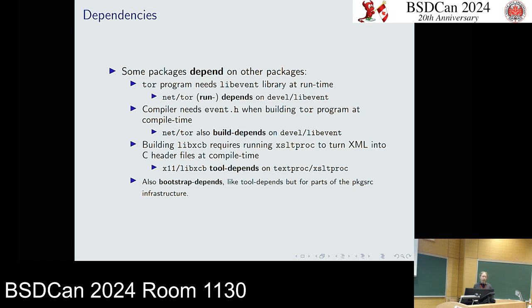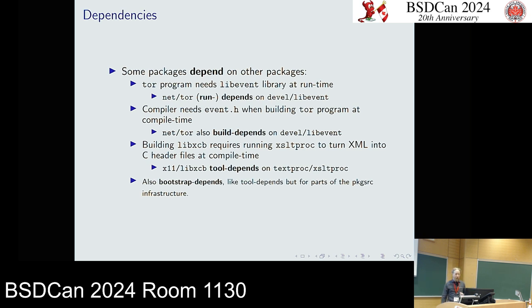However, the compiler does need event.h from libevent, and it probably also needs libevent.so for the build-time linker to resolve library dependencies. So there's a different kind of dependency called build dependency — the library has to be available at compile time, installed into the destdir. It has to be a cross-built PowerPC library installed in the PowerPC destdir, not something that exists in the x86 system installation.